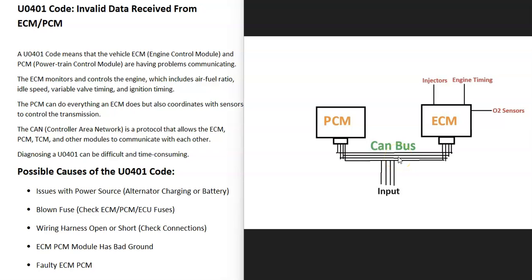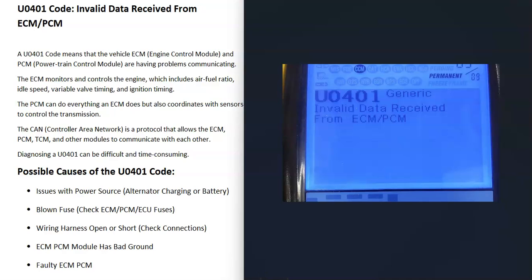The CAN bus is basically all the wires that are running between all the different control modules. You could think of the CAN bus like Ethernet in a home with a hub. One thing to note about a U0401 code is that it can be kind of difficult to troubleshoot sometimes because it can involve wiring or different things like this, so be sure to keep that in mind.